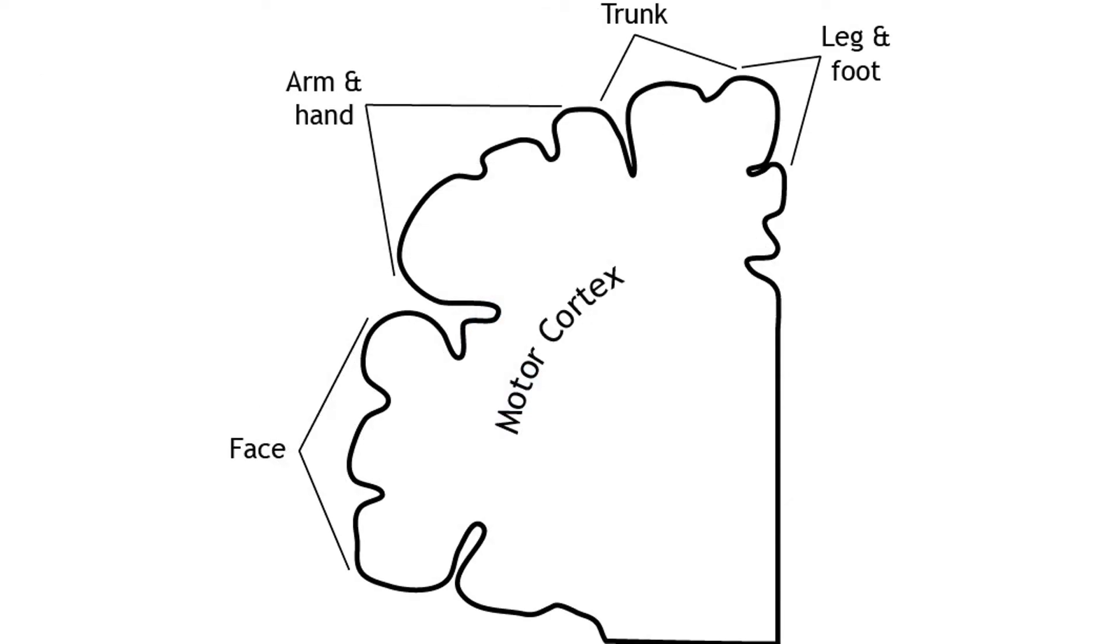Like the somatosensory cortex, the motor cortex is organized by somatotopic map. However, the motor cortex does not map onto the body in such an exact way as does the somatosensory system.